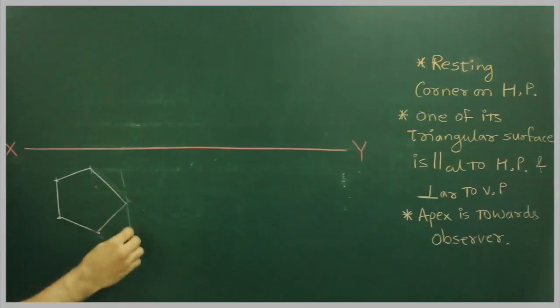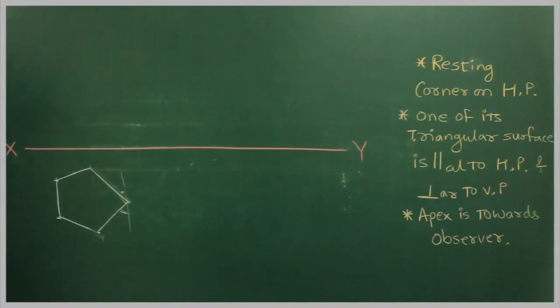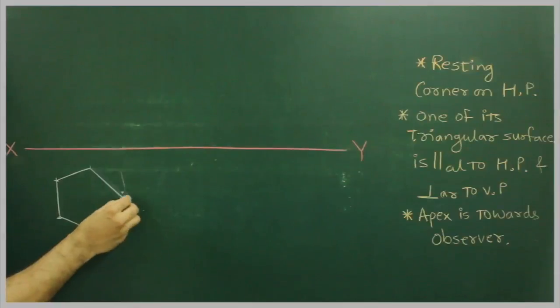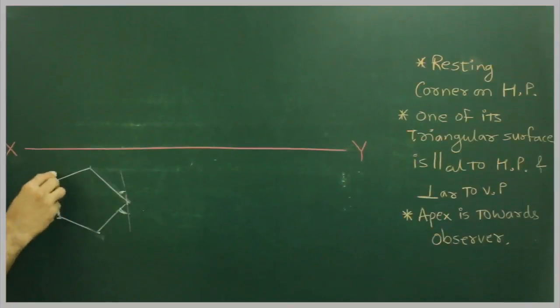Where these two angles will be same. So that is what they need when they are saying that two base edges passing through the corner on which it has an equal inclination with horizontal plane. So this means both the angles are same, that means this angle, this line is straight.